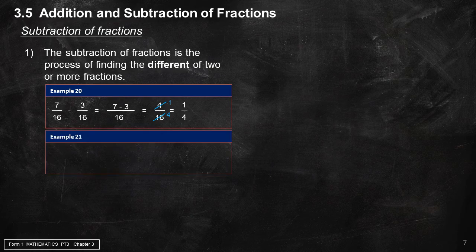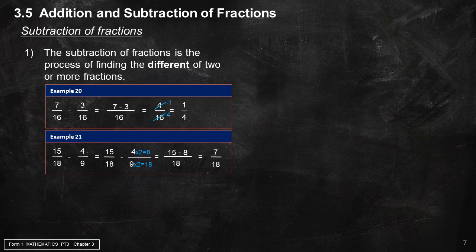Example 21: 15 over 18 minus 4 over 9. Upscale 4 over 9 to 8 over 18. Then: 15 over 18 minus 8 over 18 equals 7 over 18.